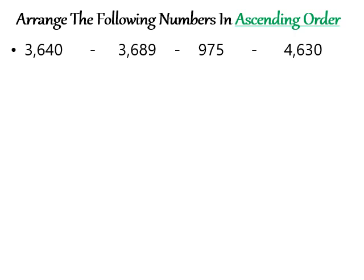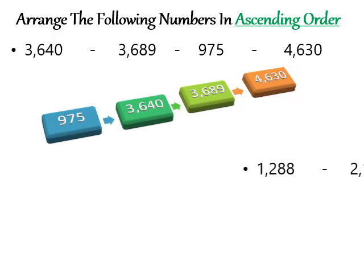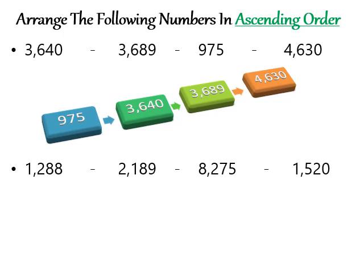Here is an example to arrange numbers in ascending order — from smallest to biggest. The smallest is 975 because the remaining numbers are 4-digit numbers and 975 is only a 3-digit number, so it goes first. Then comes 3640, followed by 3689, and finally 4630. You can view the answer when you click on the screen.